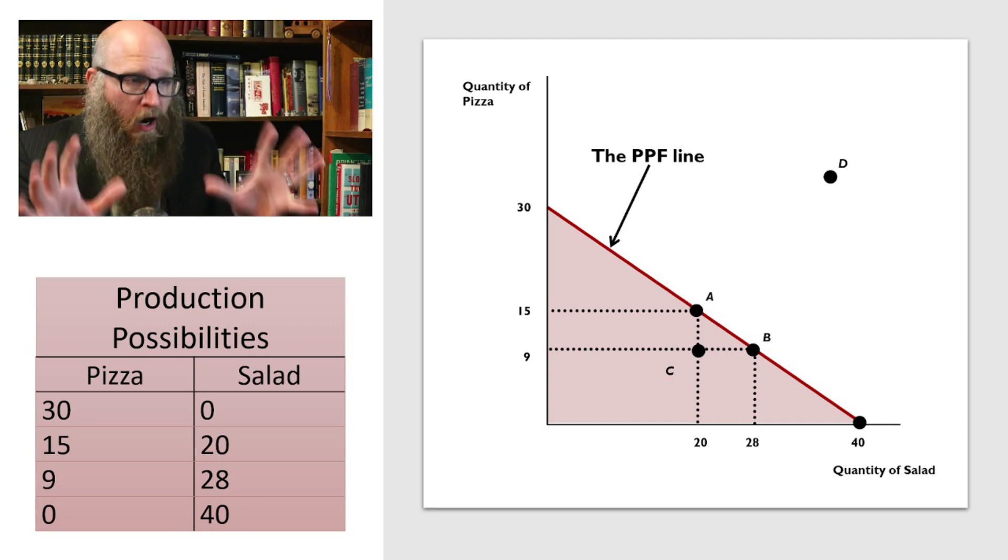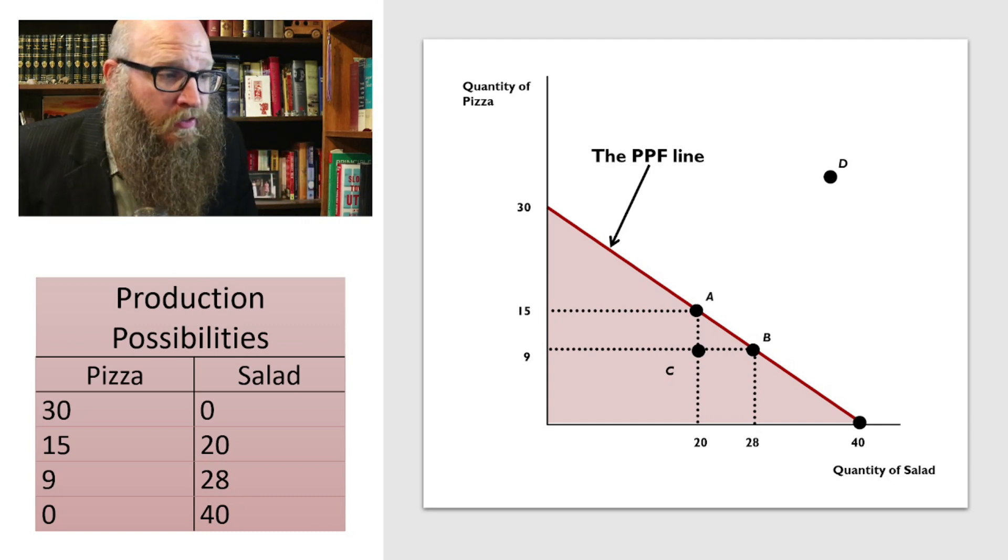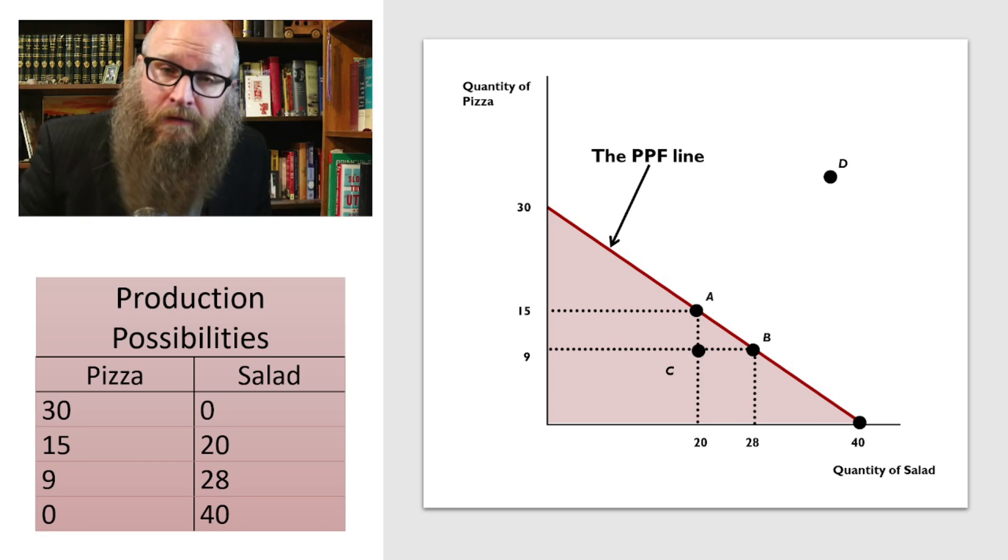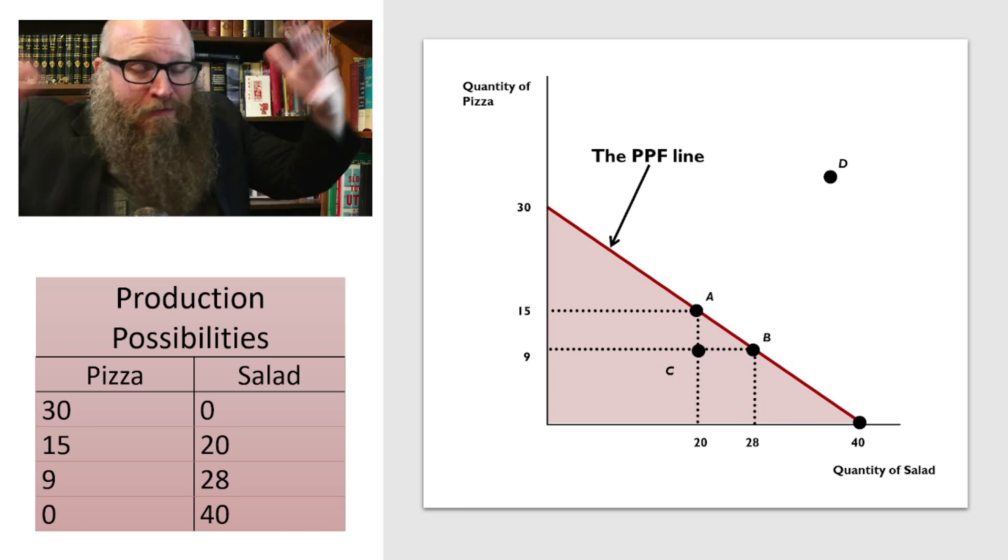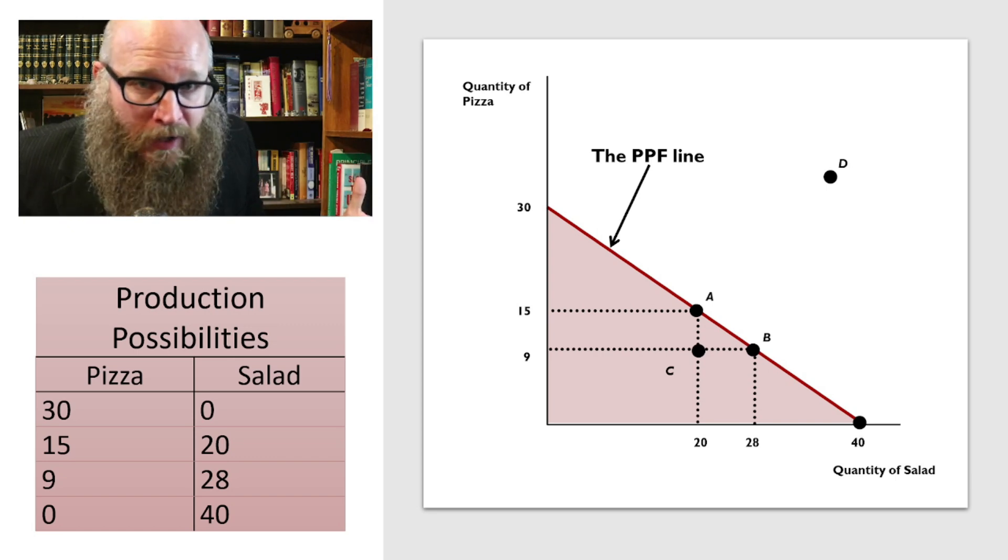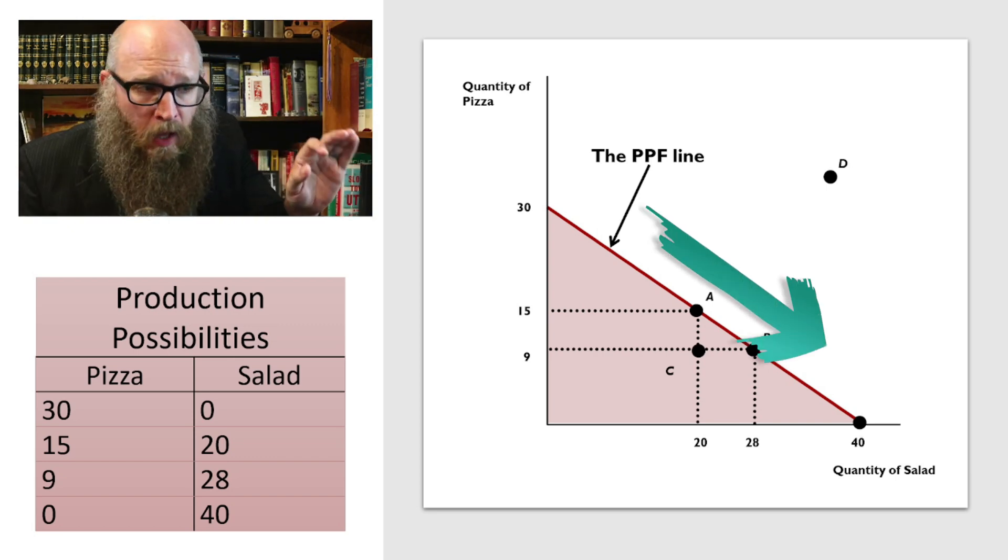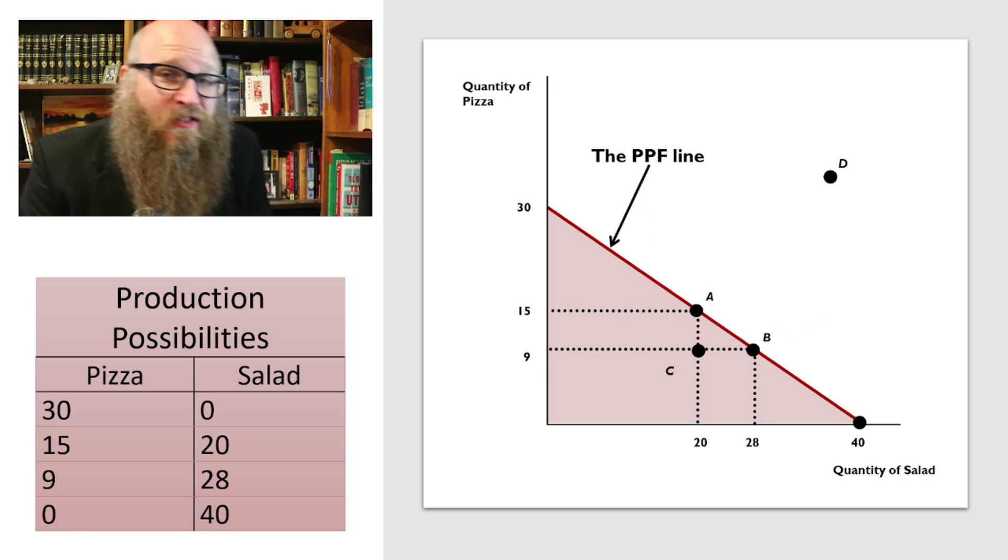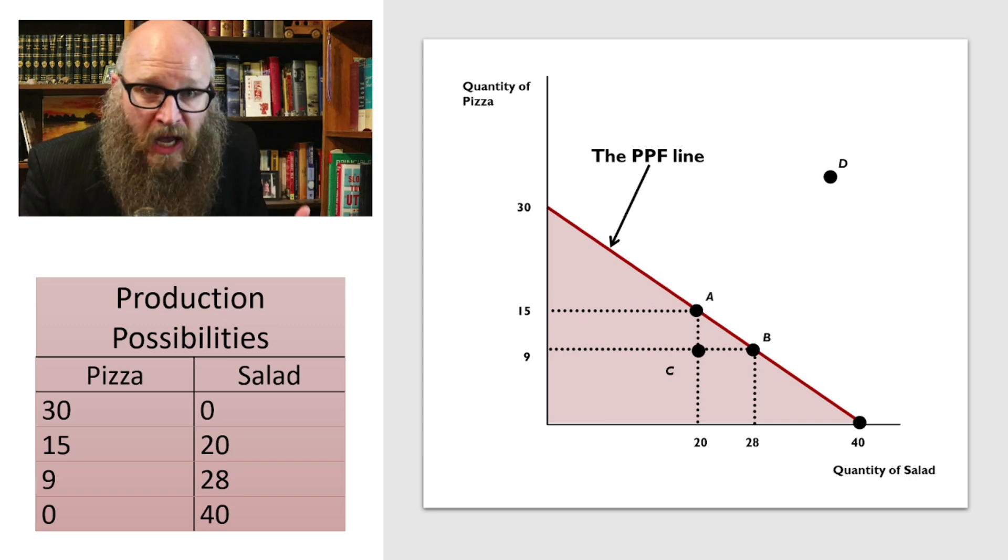So here we've got our first graph. The axes on the vertical is the quantity of pizza produced. And on the horizontal, we have the quantity of salad. A full healthy diet in front of us. Then we have a downward sloping line. We've labeled the line the production possibility frontier line. And it's going to be a set of trade-offs. We can produce so much pizza or we could produce so much salad.